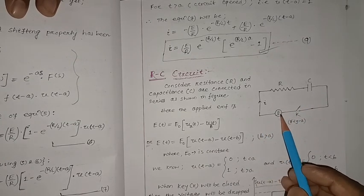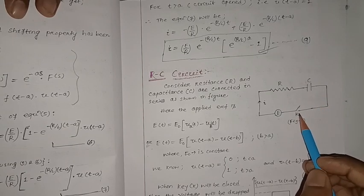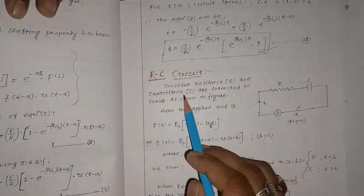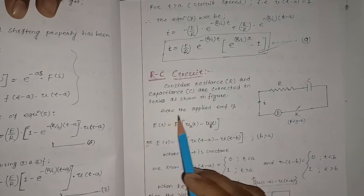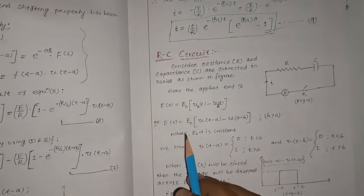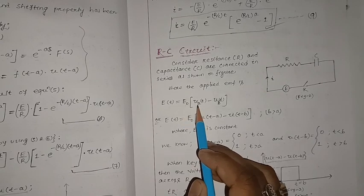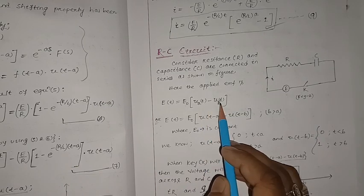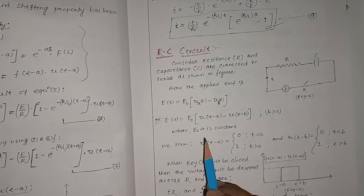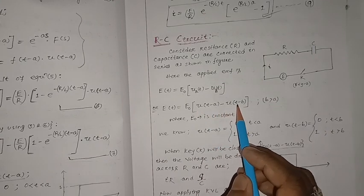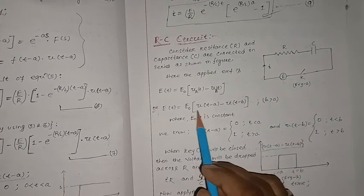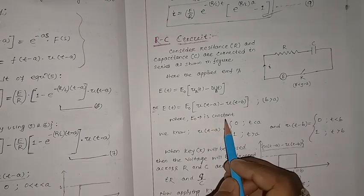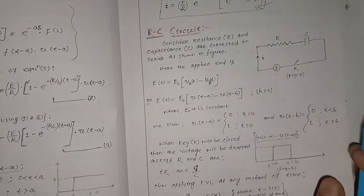The circuit is connected with an EMF, resistance, and capacitance. When the key is closed, current i will flow through the circuit. Consider the resistance and capacitance connected in series as shown in the figure. The applied EMF is e(t) in the format: E₀ · [u(t−a) − u(t−b)], where u(t−a) and u(t−b) are unit step functions and b is greater than a. E₀ is a constant.